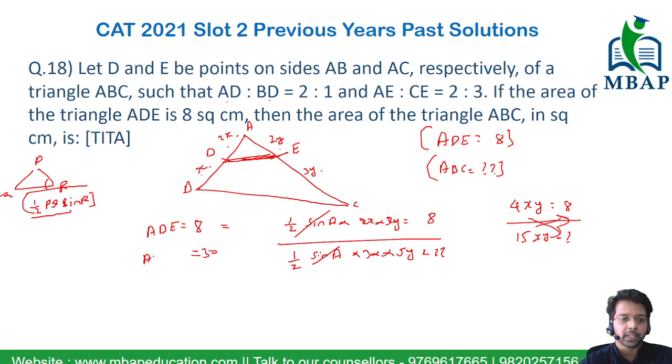So 30 will be the answer for the area of triangle ABC. This answer will be a TITA question, but the answer will be as simple as 30 which you will type in.